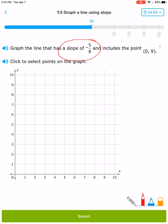A slope of -5/8 with a point of (0, 9). So (0, 9). And now if I want a slope of -5/8, that tells me I need to go down 5 and right 8.